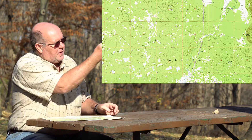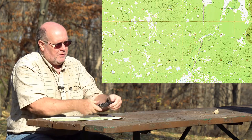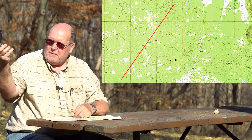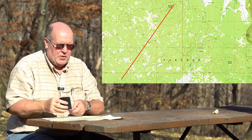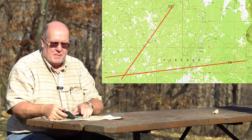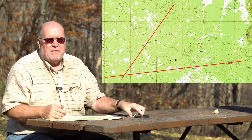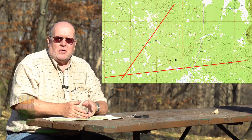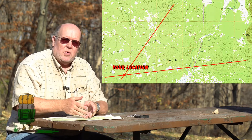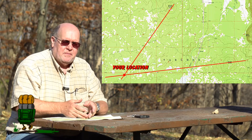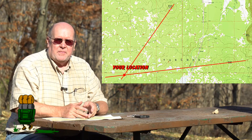You want to know where you are on the map based on places on the map. You take a bearing of this feature, you transfer it to the map, you take a bearing of this feature, you transfer it to the map, and you continue that with three or four, maybe even five features, and that gives you your location of where you are. That is resection.